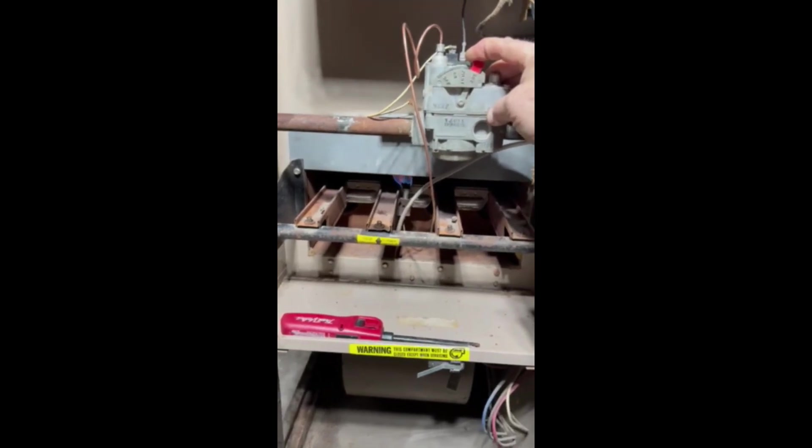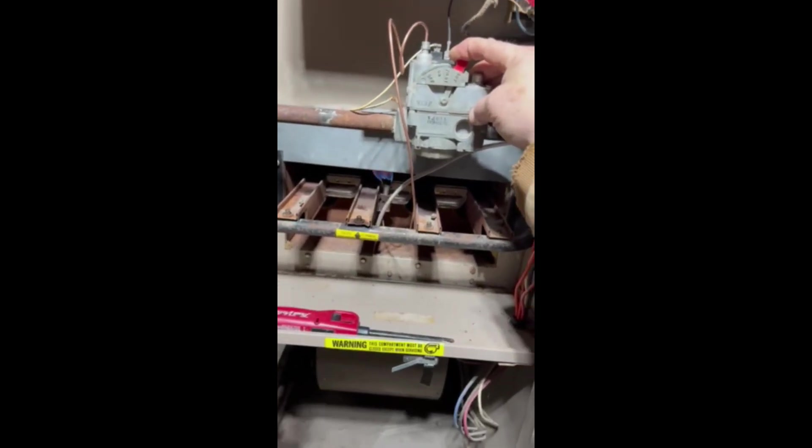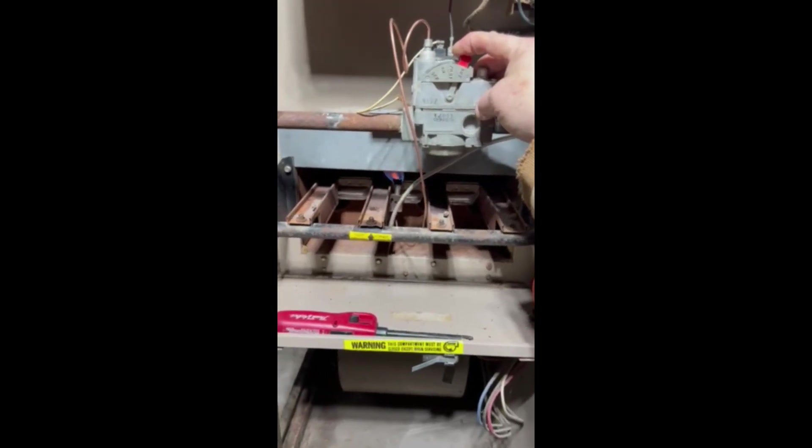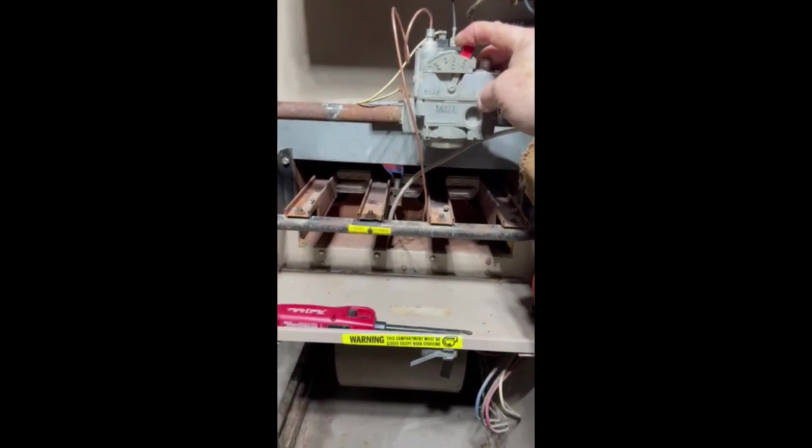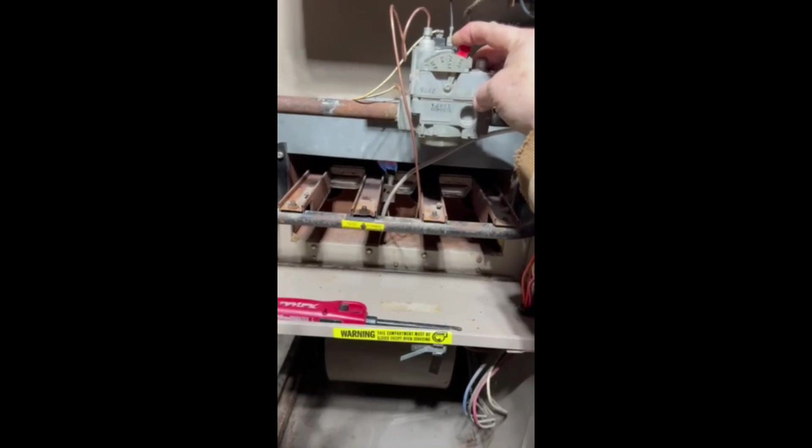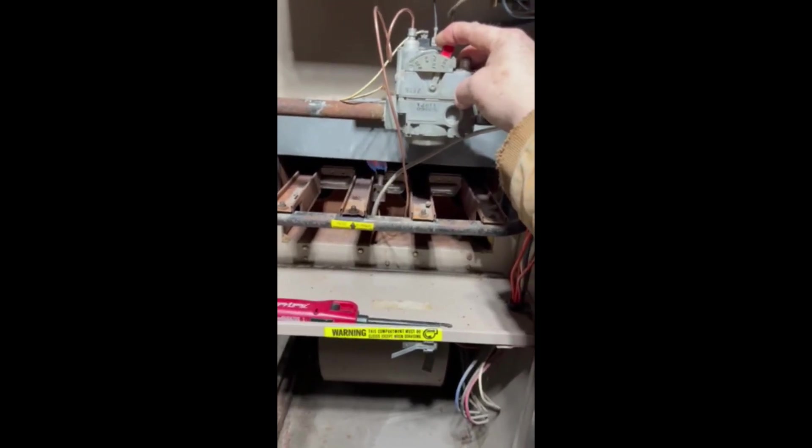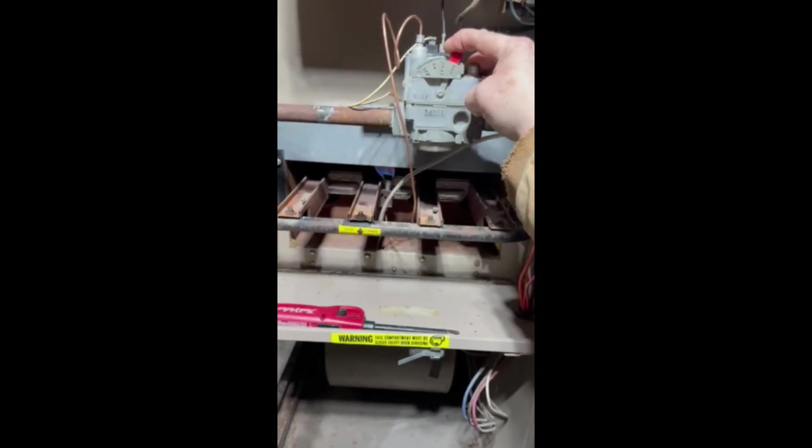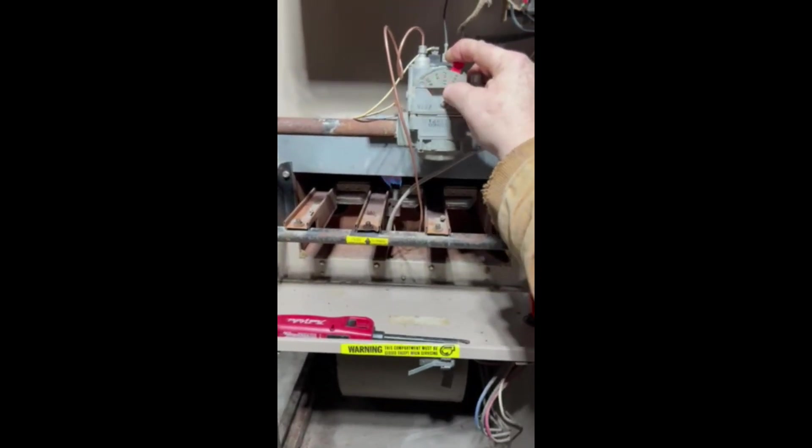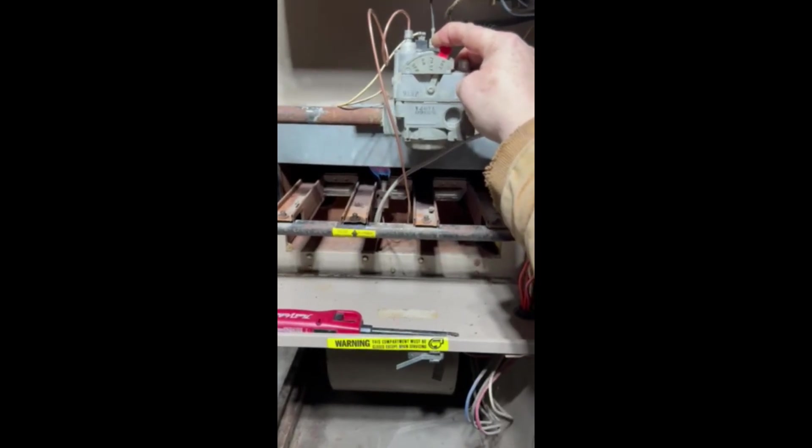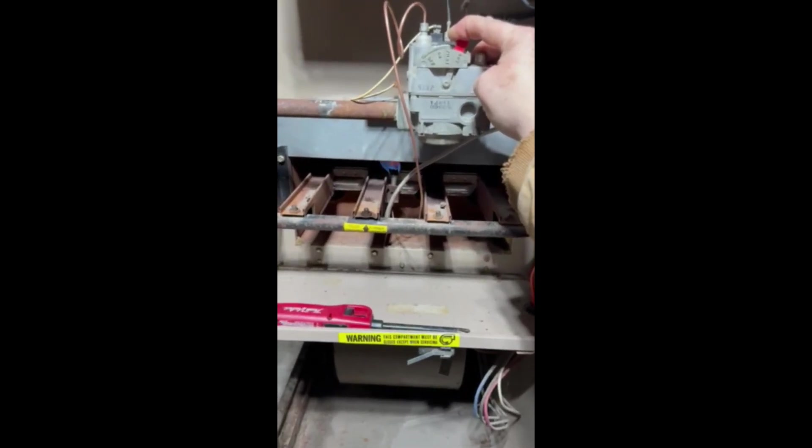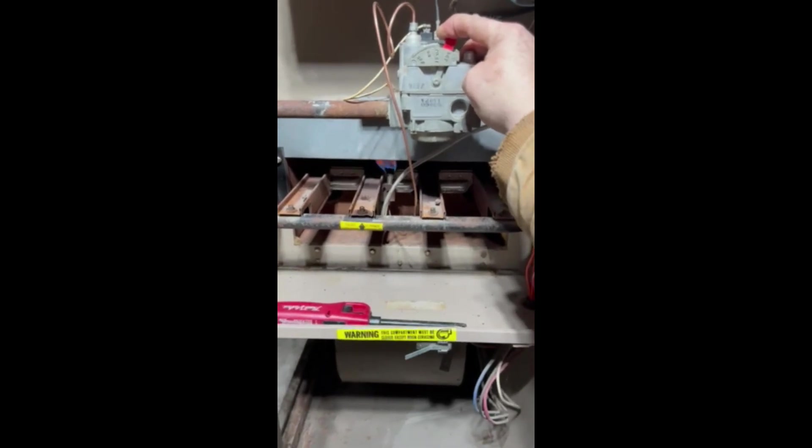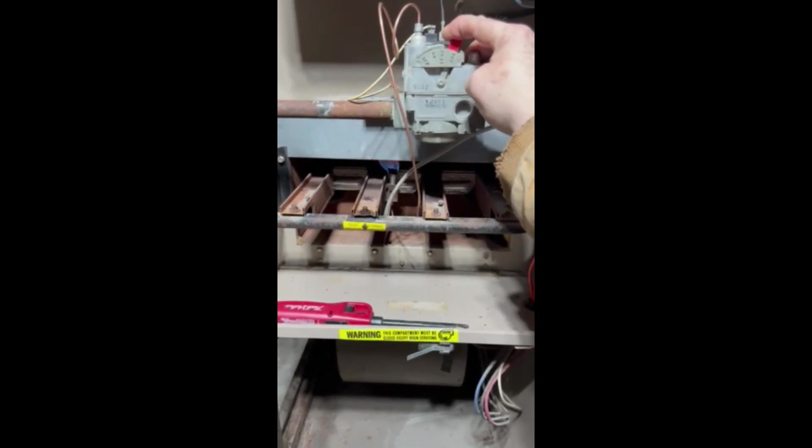Now what happens when you do this, the thermocouple tip is made of two dissimilar metals that, when they're heated up, create a tiny electrical charge. In a weird way, it's kind of like you're setting a mousetrap backwards, in layman's terms.